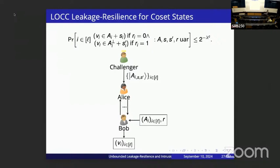In this setting, the challenger prepares coset states and gives them to Alice. Bob adaptively specifies multiple rounds of measurements applied to the coset states and learns the leakage outcomes. Similar to the leakage resilience setting, after all these leakage outcomes, Bob also learns a random challenge and the subspace descriptions, and shouldn't be able to output vectors in the correct subspace — primal or orthogonal — with probability better than exponentially small given all this leakage information.